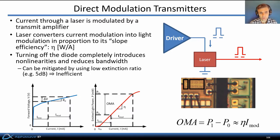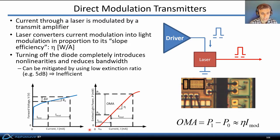We generally distinguish between two types of optical transmitters: directly modulated and externally modulated. In direct modulation, the current through a laser is directly modulated by a transmit amplifier, and the laser converts this current modulation into light modulation in proportion to its slope efficiency. If the diode is turned off completely, it introduces non-linearities and reduces modulation bandwidth, so the laser always operates with some minimum optical output power and corresponding minimum current. This results in a relatively low extinction ratio for directly modulated transmitters — for example, around 5 dB is typical — implying some power inefficiency.